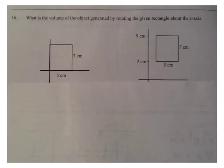On this problem, number 16, is to find the volume of the object that is generated by rotating the given rectangle around the x-axis. So really we have two problems here. First, we have this rectangle going around the x-axis.